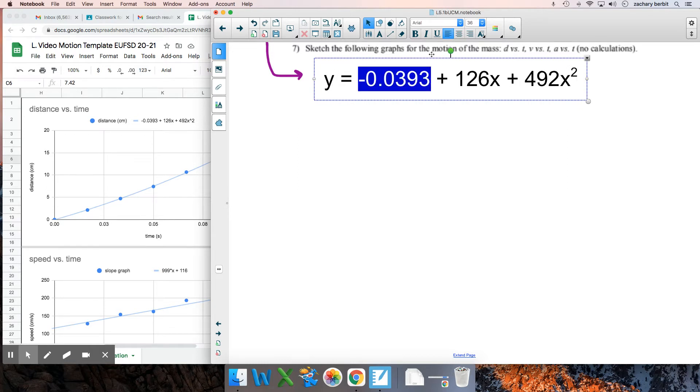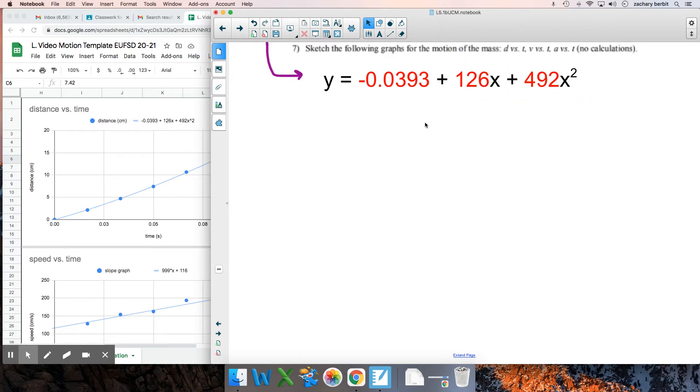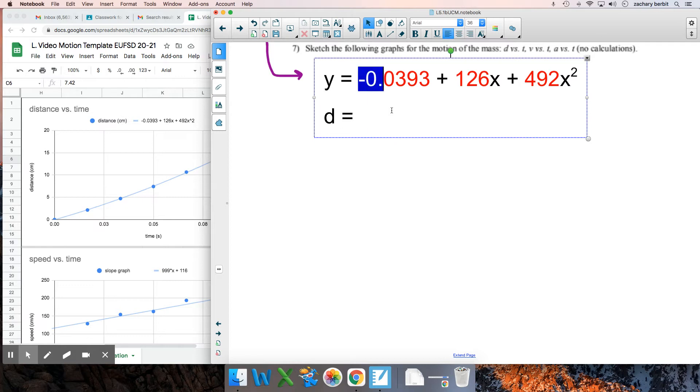Y equals negative 0.0393. Your numbers will likely be different, plus 126x, plus 492x squared, okay? I'm going to highlight up here these in different colors because I put this in red. Like beware, your numbers should be different. If you would have guessed all six data points to be the exact same distances as mine, that's suspect right there. I think the kids these days call that sus. Stealing our old word. Anyway, the point of this, though, the y-axis is distance. The x-axis is time. So literally, what I'm doing, I want you to do. I want you to rewrite this as D for distance equals, and put all your numbers in there.